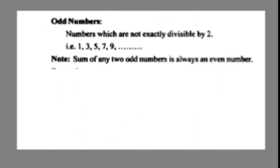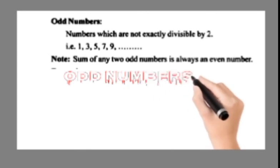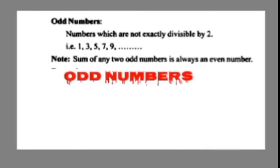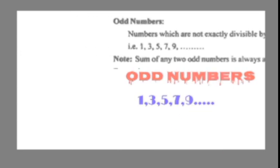Odd Numbers are numbers which are not exactly divisible by 2. We get a remainder of 1. Note: Sum of any 2 odd numbers is always an even number. Examples: 1, 3, 5, 7, 9, and so on.